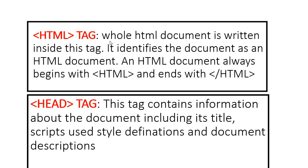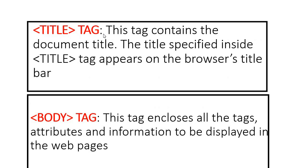I will now explain one by one the tags used in the example document structure. The first is the HTML tag — the whole HTML document is written inside this tag. The document starts with HTML and ends with slash HTML. Then comes the head tag: the header part contains information about the document including its title, scripts used, style definitions, and document descriptions. The title tag contains the document title, which appears on the browser's title bar. The body tag: whatever you write inside it is displayed in the body part of the web page.